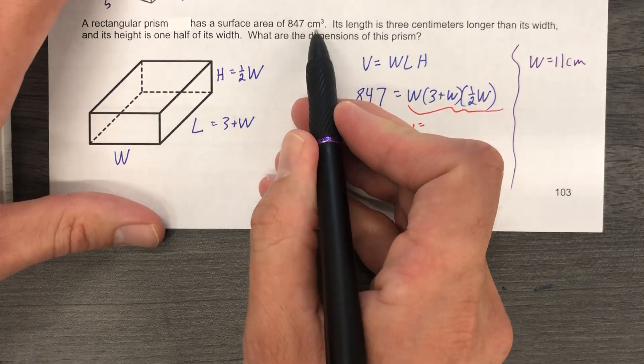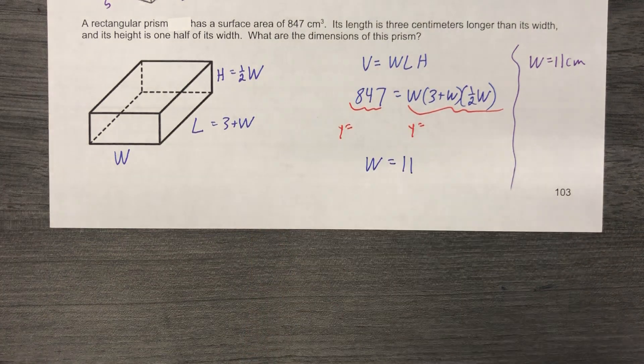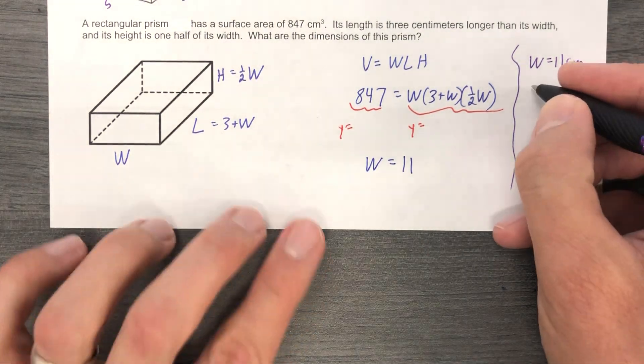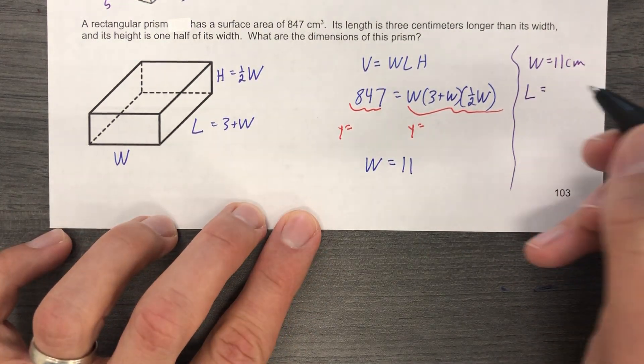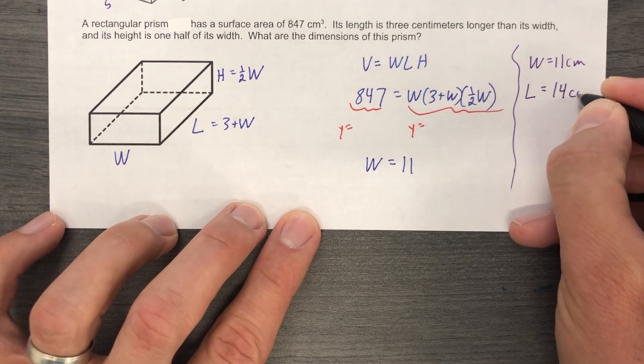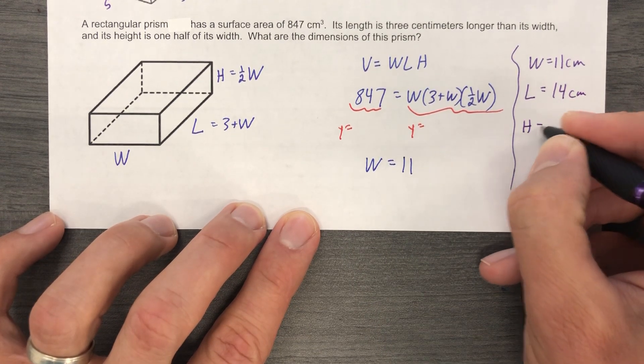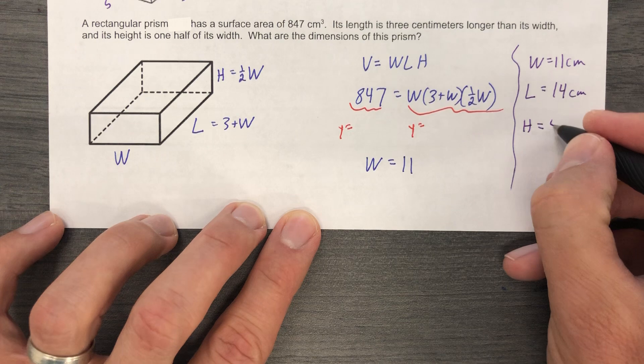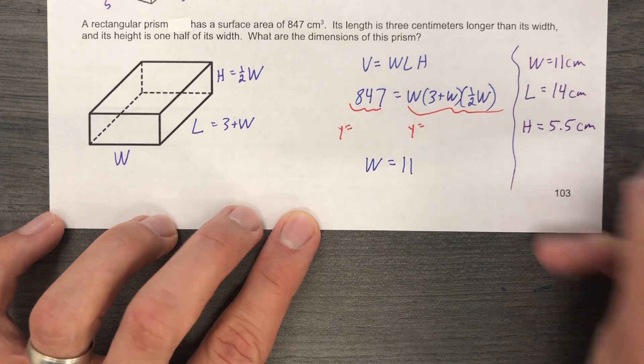Where's your good centimeters? I was looking right there. The volume is cubic centimeters, then the lengths are going to be in terms of centimeters. And this is 3 plus W. So that must be 14 centimeters. And the height is half of 11. So it must be five and a half centimeters.